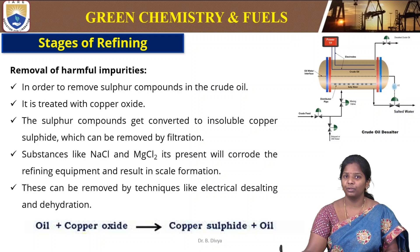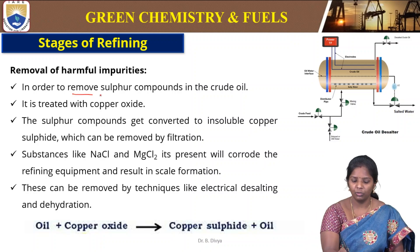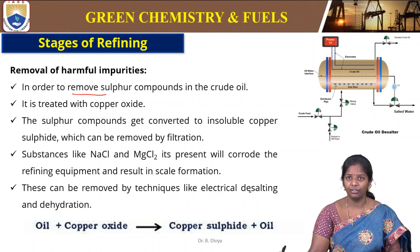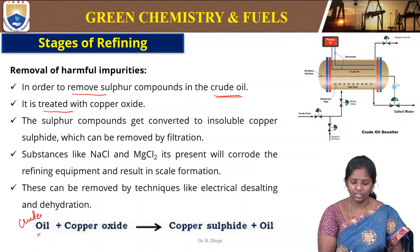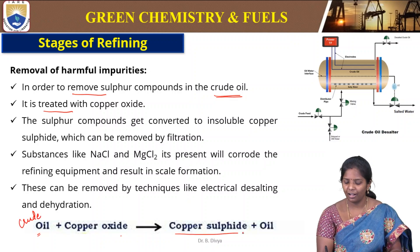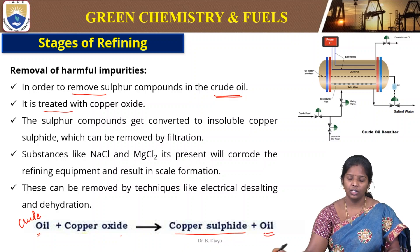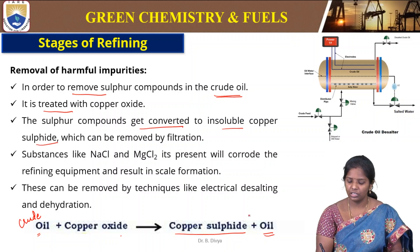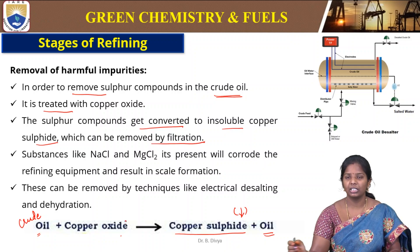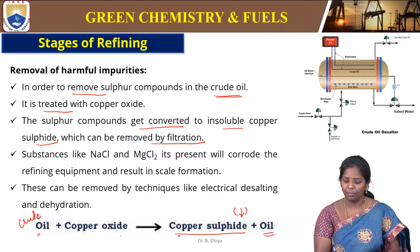The next step is the removal of harmful impurities. Crude oil generally contains sulfur compounds such as sulfides. The crude oil is treated with copper oxide, which converts the sulfur compounds to insoluble copper sulfide, and the oil is left over. This copper sulfide precipitates and can be removed by simple filtration.